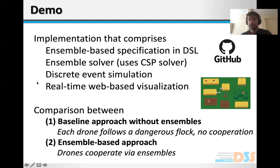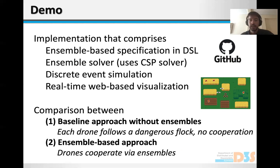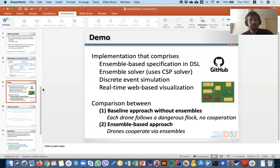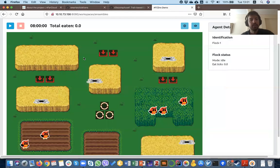We also provide a nice-looking real-time visualization simulation, which I will show in a second. Having this, we can do different experiments and comparisons. What we have done so far is a comparison between a baseline approach where no ensembles are used — each drone just finds a flock that looks suspicious or dangerous and follows it and scares it off the field — and a second case using the ensembles to model the collaboration between drones.